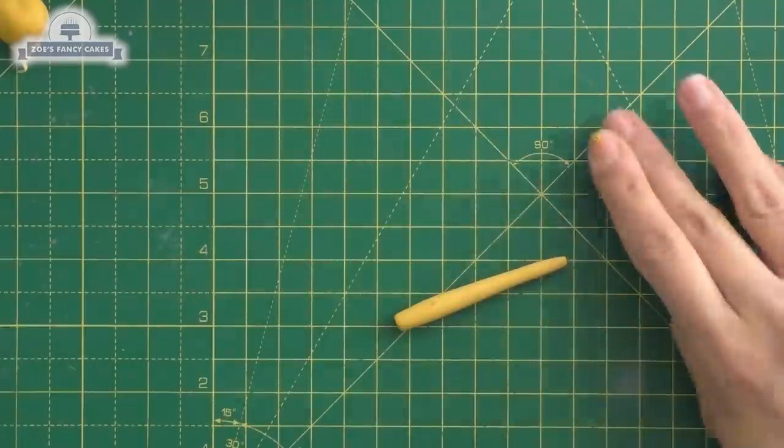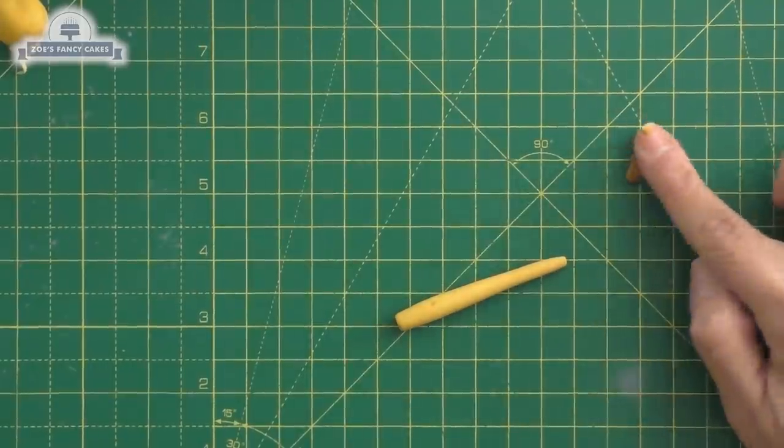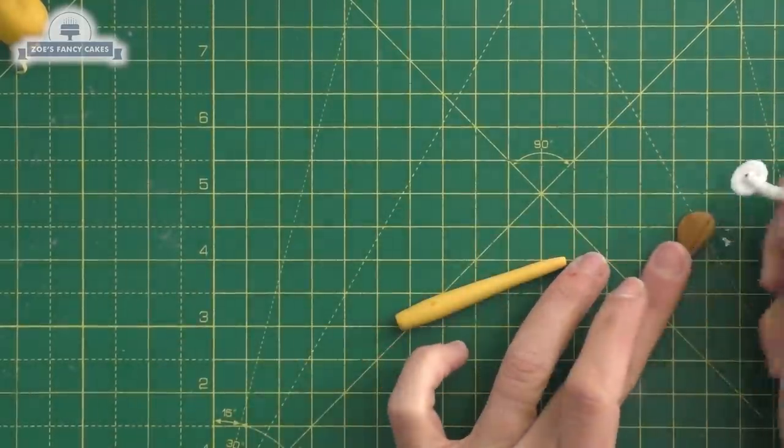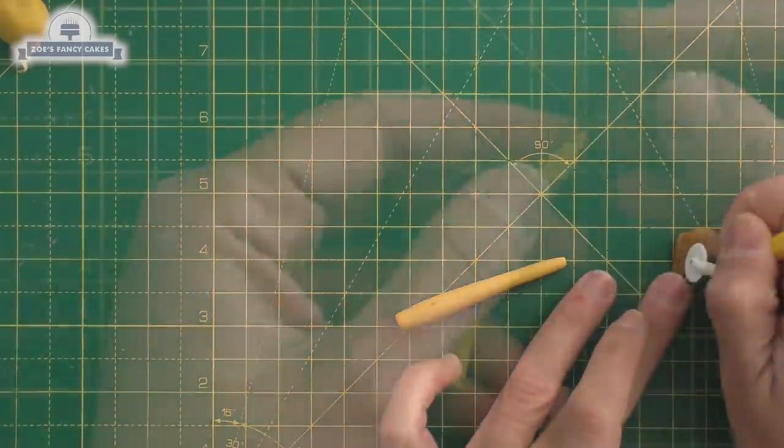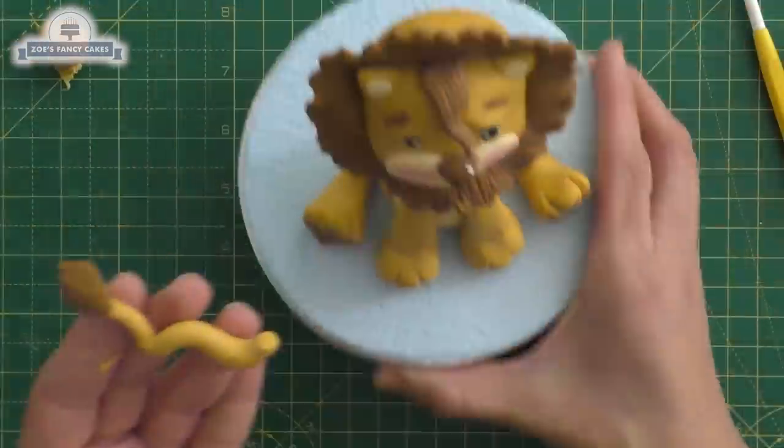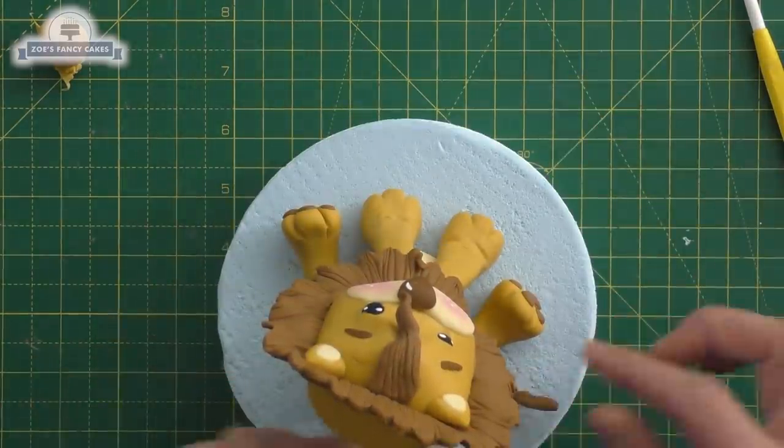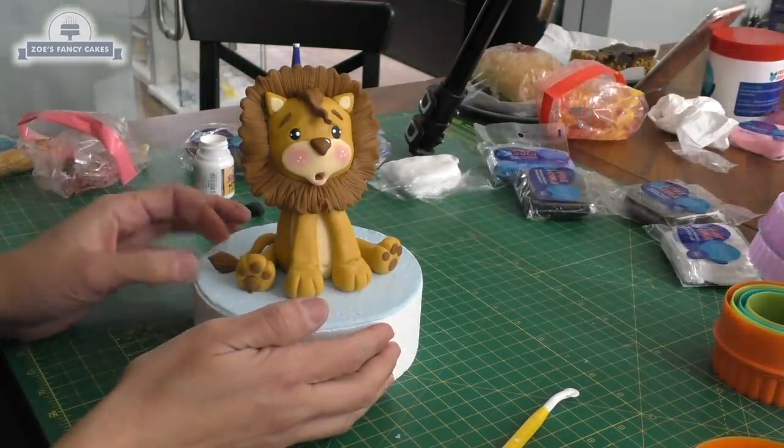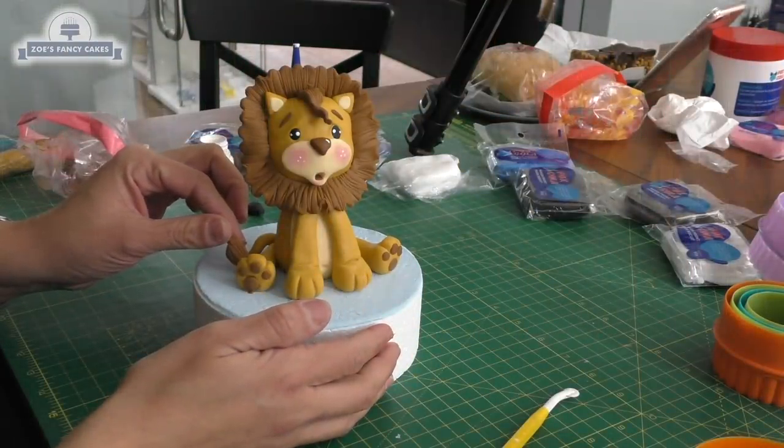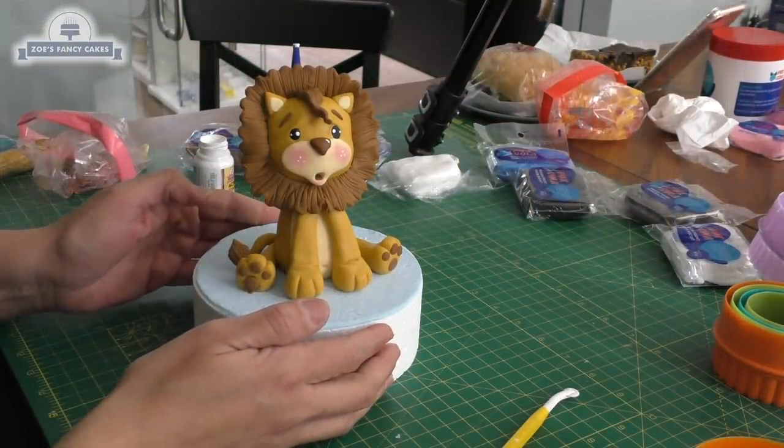Now for a tail, we want a long thin piece of the yellowy color with a teardrop of the brown just stuck on the end. Give it a bit of a curve and that'll just push onto the back onto its bum. And you do need to press this paste nice and firmly because it does shrink a little bit when it dries. So everything has to be pushed on really securely.